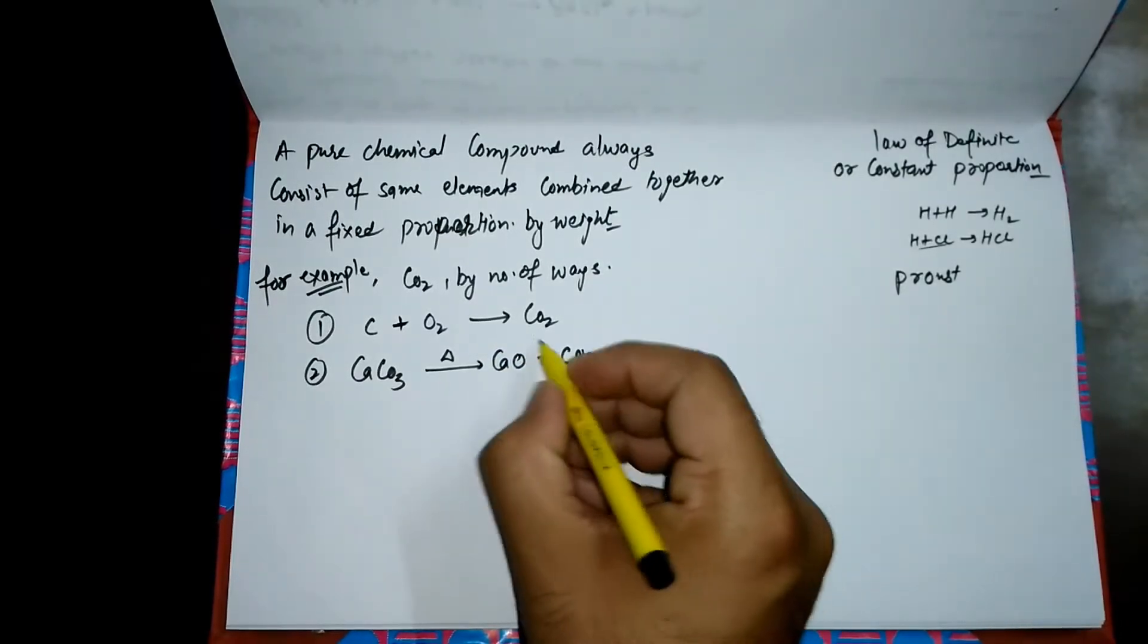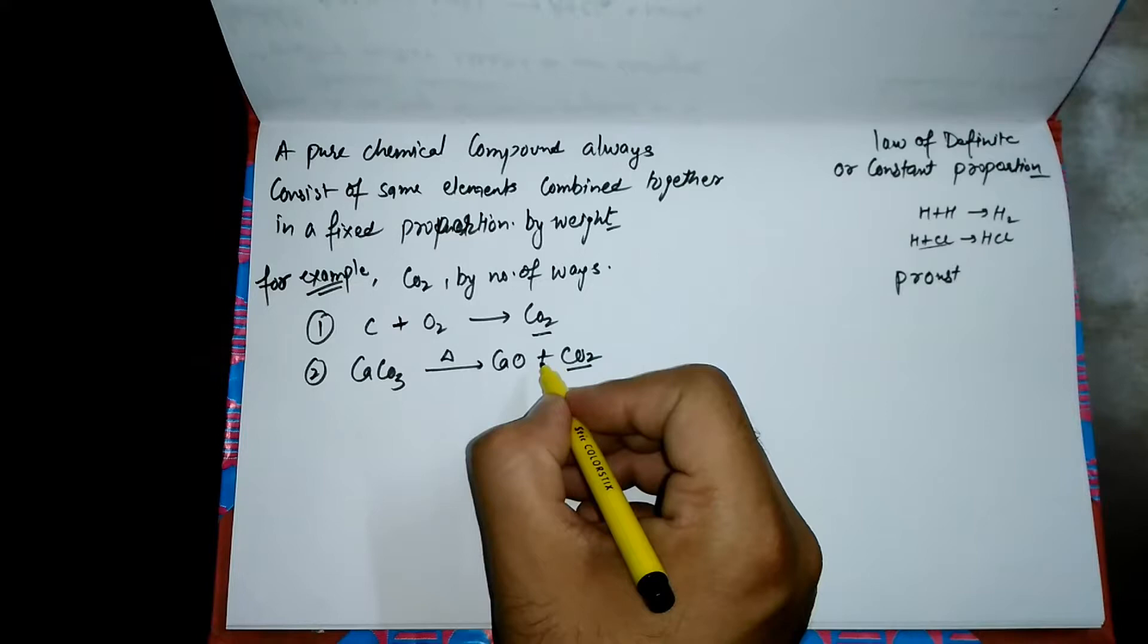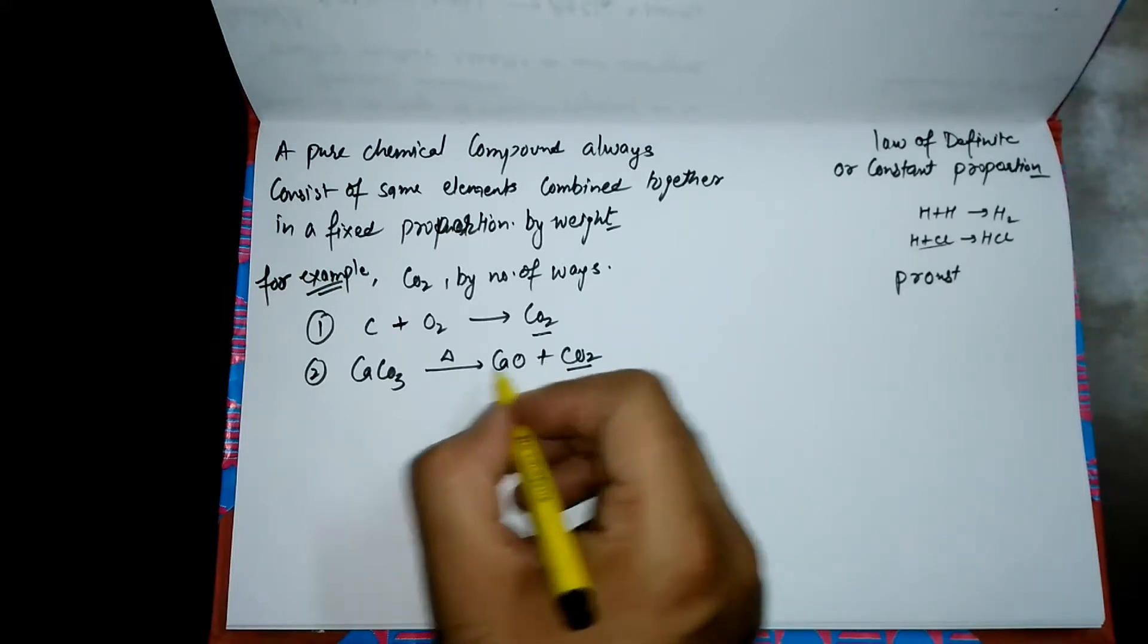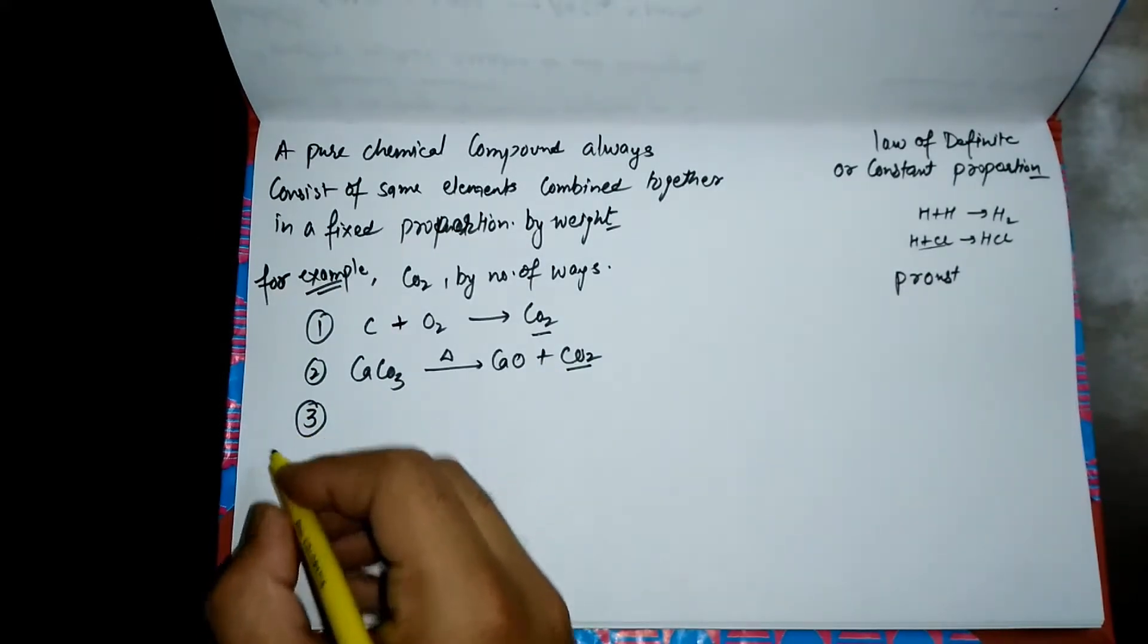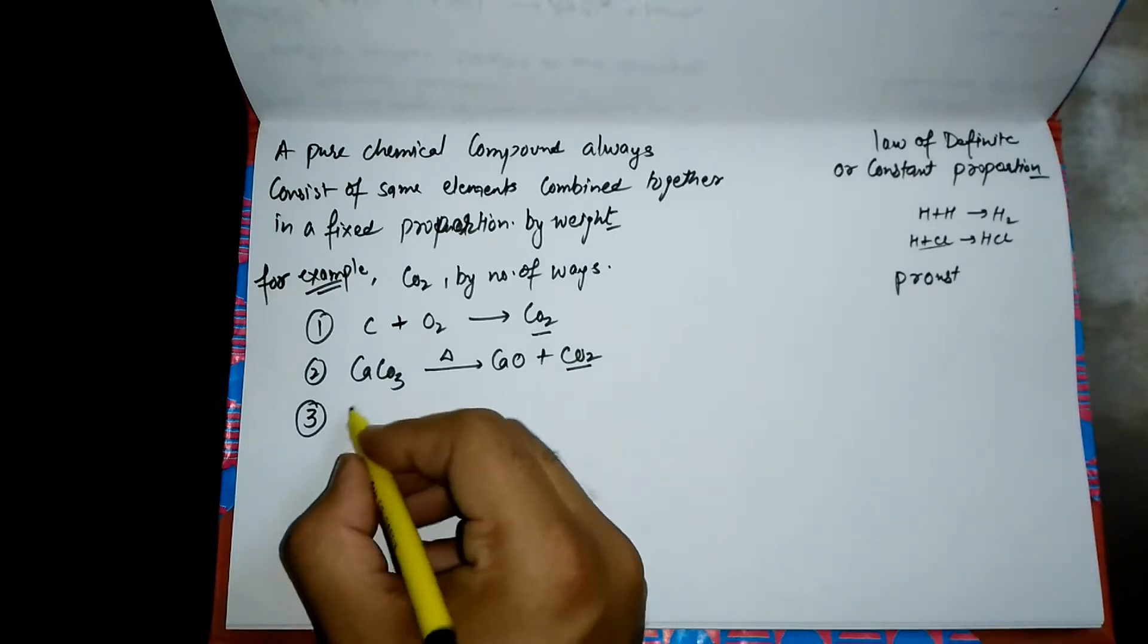We can also decompose limestone, that is CaCO3. When we heat this limestone, it will form calcium oxide and CO2. This is another way of forming CO2.